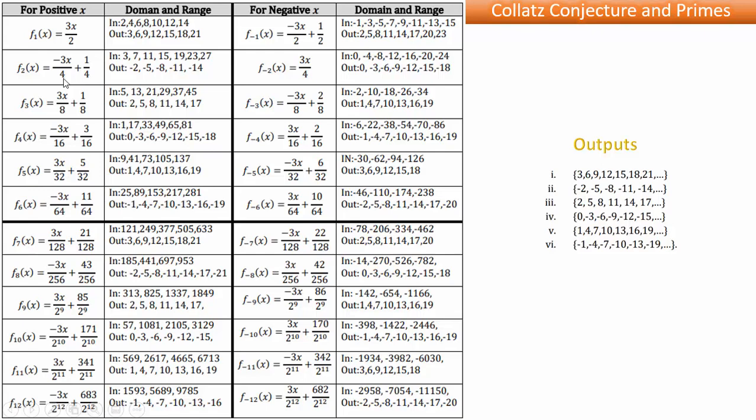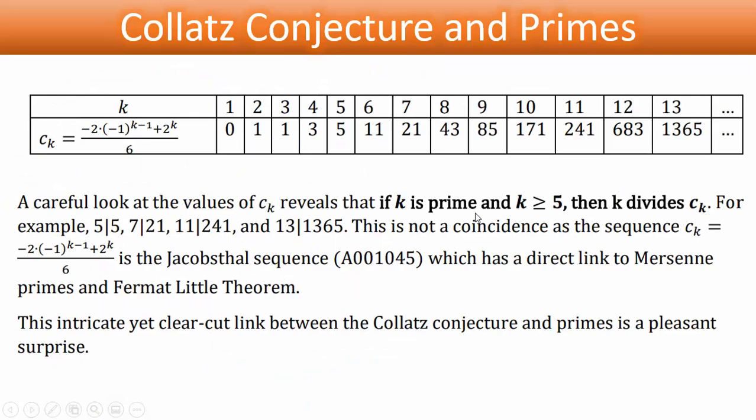Now, the numerators of the constants for the equations for positive inputs are 1, 1, 3, 5, 11, 21, 43, 85, 171, 341, 683. If we look carefully at these values, so these are the k values, and these are the numerators of the constants, just the numerators of the constants, then what we will see is something very interesting.